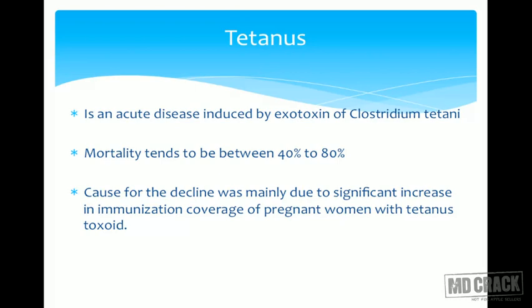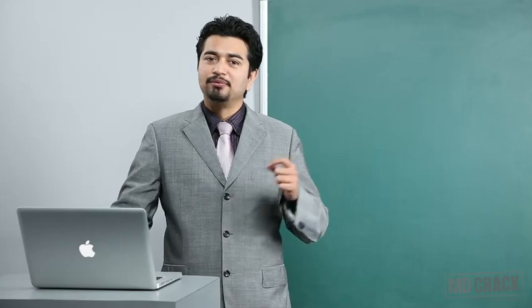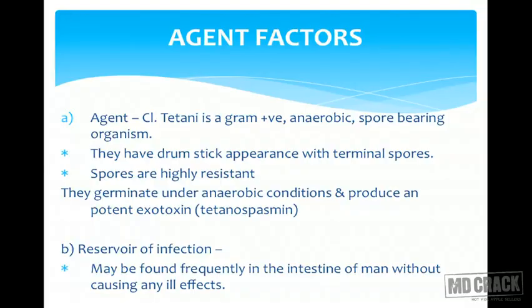The most important information for the prevention of neonatal tetanus is the immunization of pregnant females. This is because of a unique phenomenon — the transference of immunity from the mother to the child. If the mother is immunized against tetanus by tetanus toxoid, the antibodies produced in her body also confer protection to the baby. This protection is not only while the baby is in the womb but also after birth. So this is a unique method wherein we immunize the mother to immunize the baby.